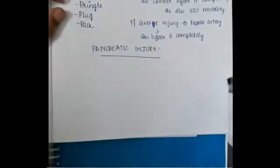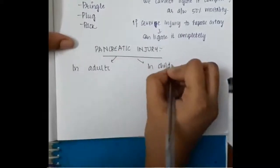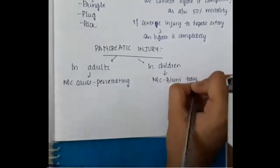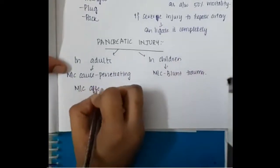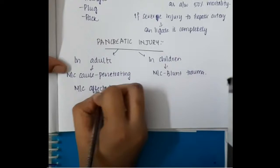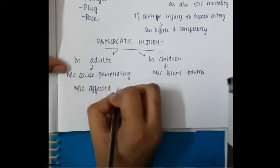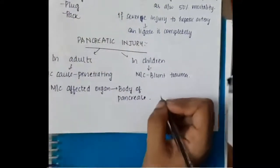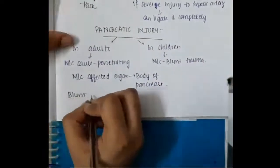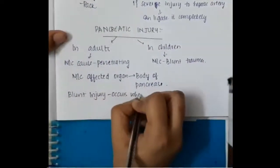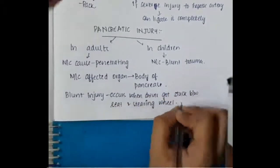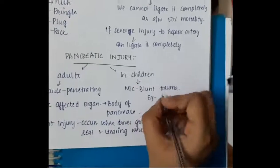The next important injury is pancreatic injury. In adults, the most common cause is penetrating injury. In children, the most common cause is blunt trauma. In adults, blunt pancreatic injury occurs when the driver gets stuck between the seat and the steering wheel.